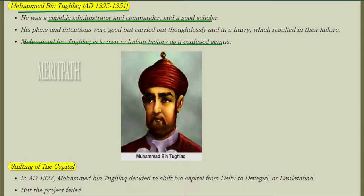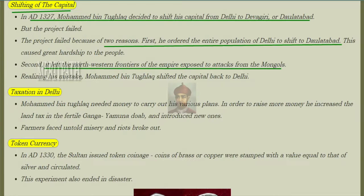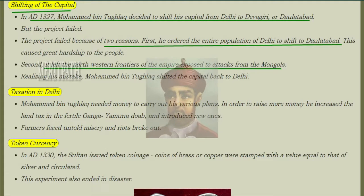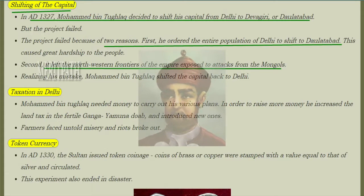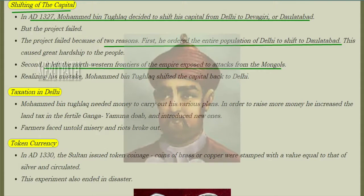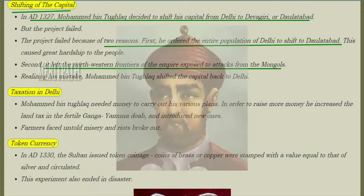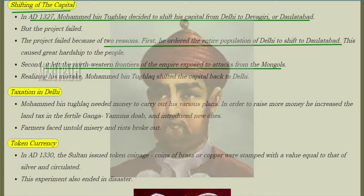Muhammad bin Tughlaq is known as the 'confused genius' in Indian history. In AD 1327, he decided to shift the capital from Delhi to Devagiri, also known as Daulatabad.